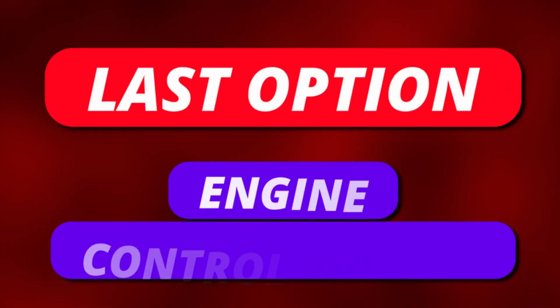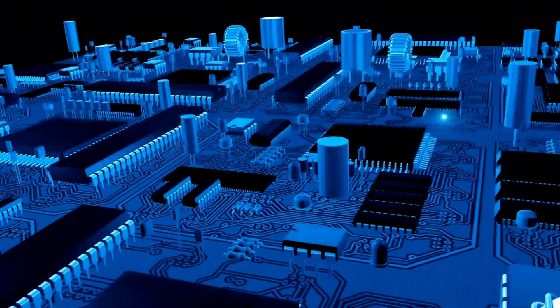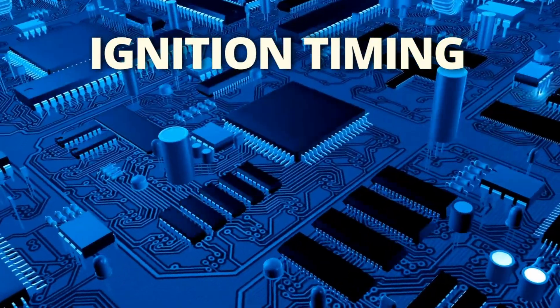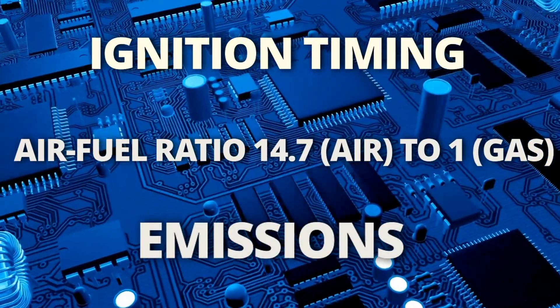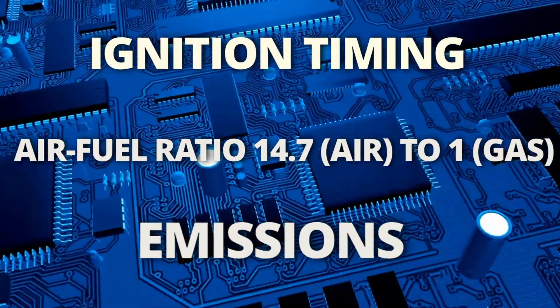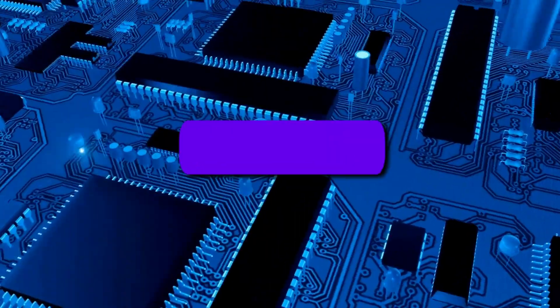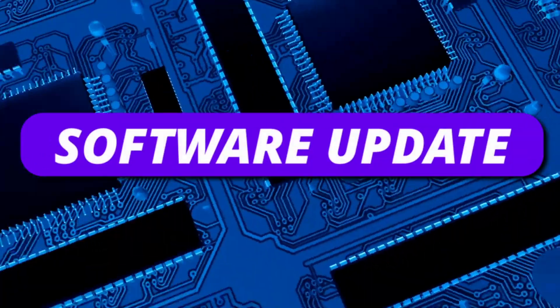The last option to consider is the engine control module. Since the ECM monitors most sensors in your car to calculate ignition timing, air-fuel ratio, and emissions, if it fails it could disrupt any of these and set a P0300 code. In some situations, all you need is a software update.